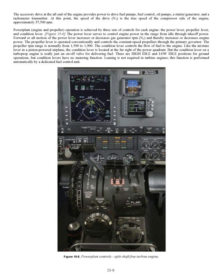Powerplant operation is achieved by three sets of controls for each engine: the power lever, propeller lever, and condition lever. The power lever serves to control engine power in the range from idle through takeoff power; forward or aft motion increases or decreases gas generator RPM (N1) and thereby increases or decreases engine power. The propeller lever controls the constant speed propellers through the primary governor; the propeller RPM range is normally from 1,500 to 1,900. The condition lever controls the flow of fuel to the engine. Like the mixture lever in a piston-powered airplane, the condition lever is located at the far right of the power quadrant, but it is really just an on/off valve for delivering fuel. There are high idle and low idle positions for ground operations, but condition levers have no metering function. Leaning is not required in turbine engines; this function is performed automatically by a dedicated fuel control unit.